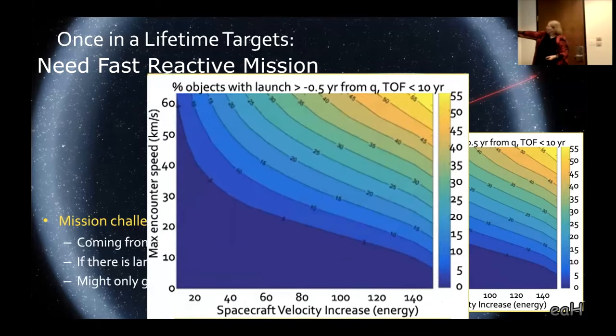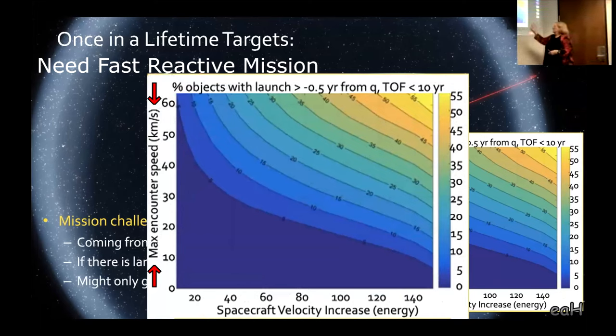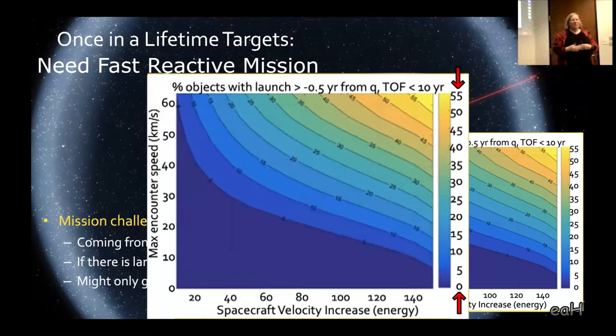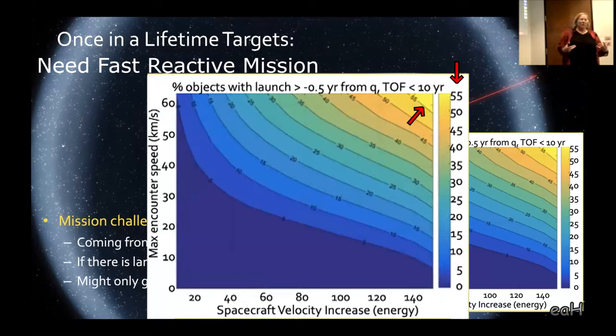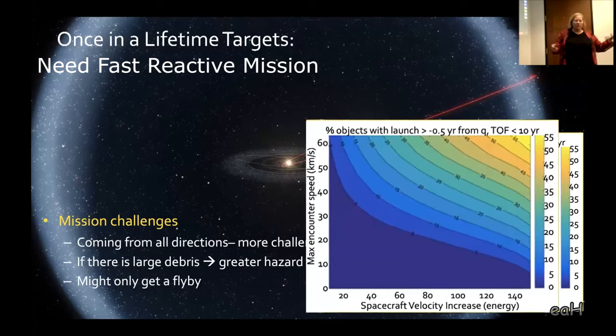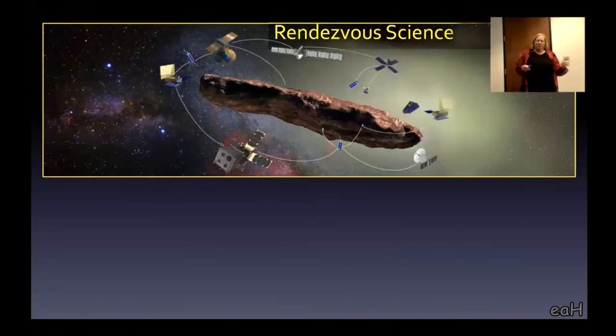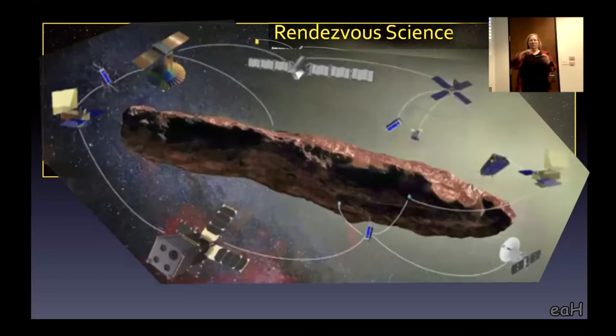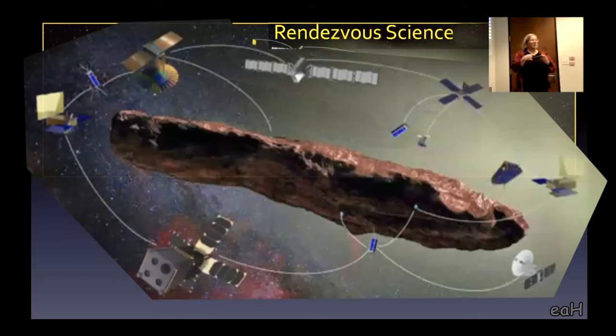What this chart is showing is spacecraft energy on the x-axis and encounter speed on the y-axis. Ideally, you want zero because that's a rendezvous. The deep blue is zero probability. Up at the yellow end of the curve, 55 percent probability if you spend a lot of money, have a huge energetic rocket, but you're going to have a super fast flyby. What do you do about it? Maybe have a spacecraft that has lots of little subspacecraft and you release everybody.